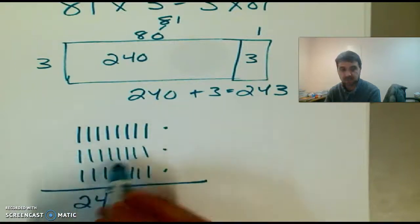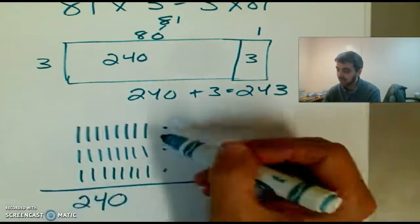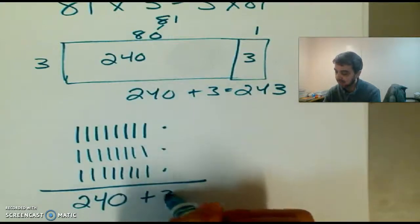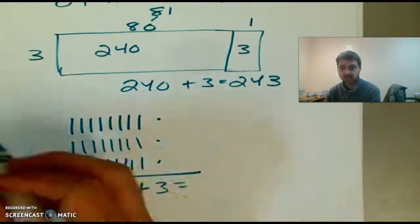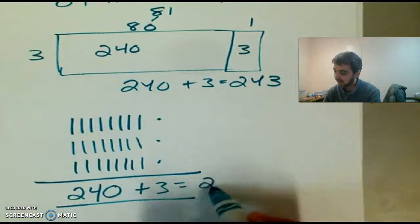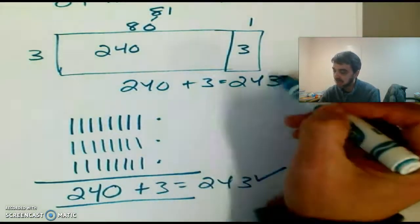80 plus 80 is 160, plus 80 is 240. And here I have 3 ones. So it's really the same thing, right? 240 plus 3, I end up getting the same answer. So I must be correct.